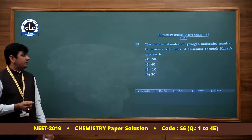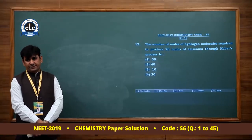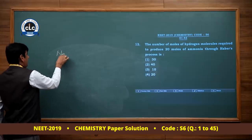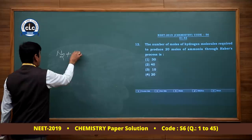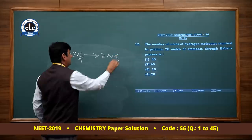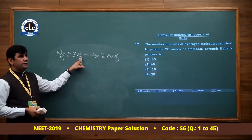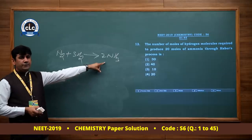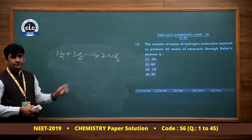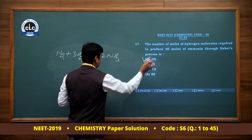The number of moles of hydrogen molecules required to produce 20 moles of ammonia through Haber's process. In Haber process: N2 + 3H2 → 2NH3. For the formation of 2 moles of NH3, 3 moles of hydrogen are required. For 20 moles of NH3, 30 moles of hydrogen are required. Option 1 is correct.